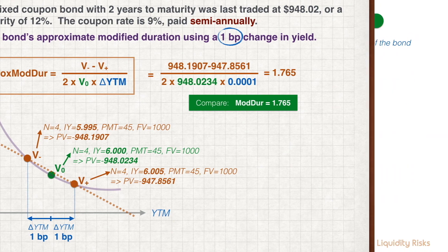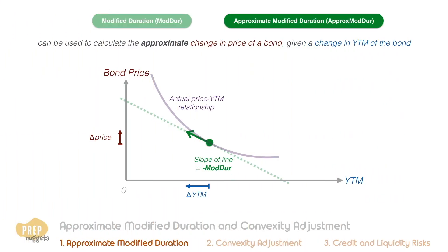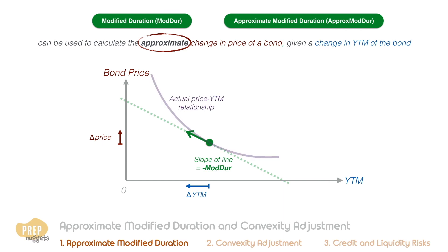We've established that both the modified duration and approximate modified duration can be used to calculate the approximate change in price of a bond given a change in yield. The approximate modified duration is simply a shortcut to calculate the modified duration. Regardless, both methods are only a means to calculate the approximate change in price. As you can see from the graph, the actual relationship between price and yield to maturity is a convex curve, so using a straight line to calculate is only an approximation.